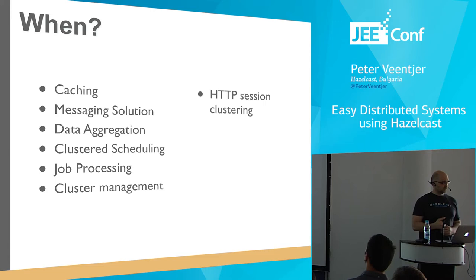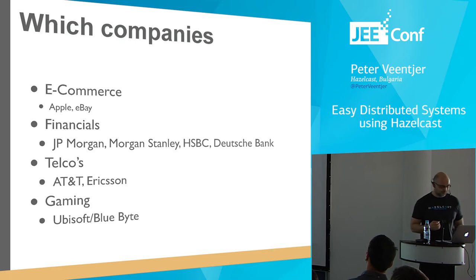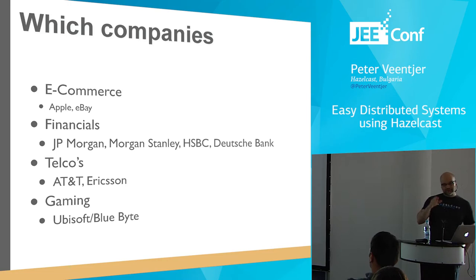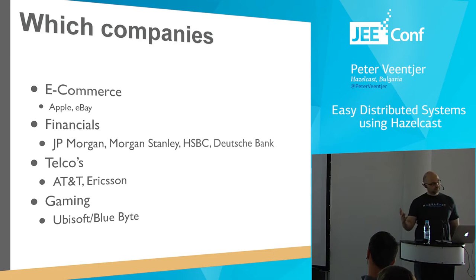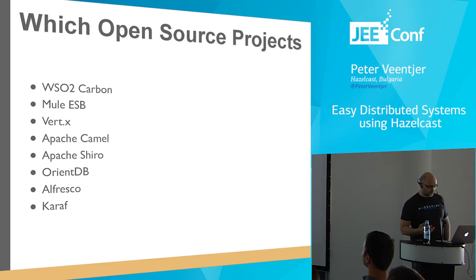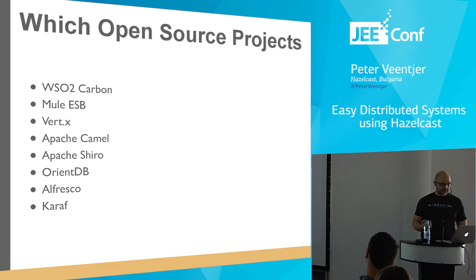There are a lot of companies using Hazelcast — e-commerce companies like Apple and eBay. Apple uses in total something like 600 members separated into 10 clusters of 60 members each. We have financial organizations like JP Morgan, telcos, and gaming companies, so we have a whole range of different types of customers. There are also a whole bunch of open source projects using Hazelcast, including Drools, WSO2, PowerEdge, the Mule ESB, and Vert.x. So if you use these products, then indirectly you're also using Hazelcast.